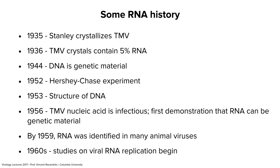In 1944 we talked about the experiment showing in bacteria that DNA is the genetic material — Avery, McLeod and McCarty. In 1952, Hershey-Chase showed that the DNA of a bacteriophage is the genetic material. The structure of DNA was solved in 1953, and then three years later it was shown that the nucleic acid of tobacco mosaic virus — the RNA — is actually infectious. This was the first demonstration that RNA can be genetic material.